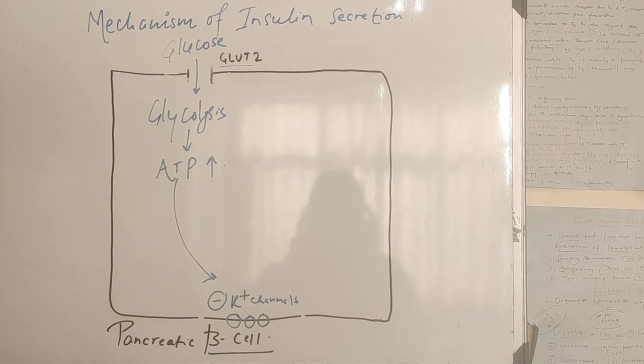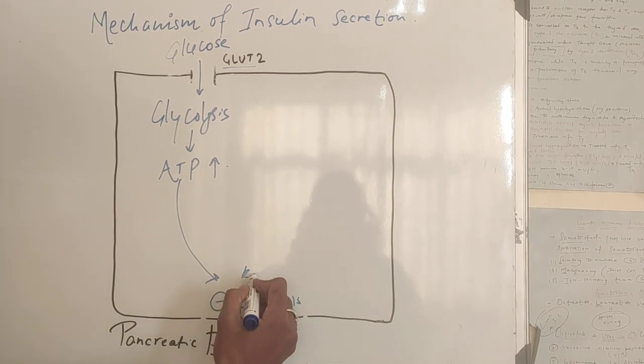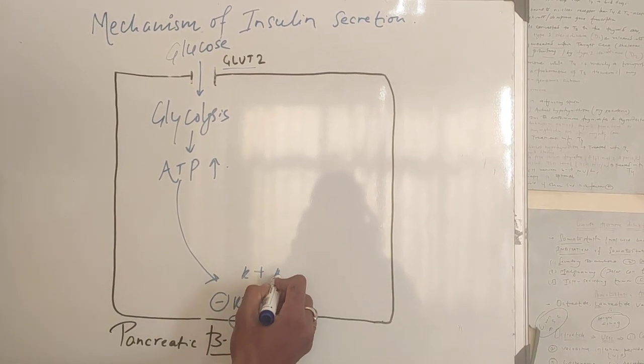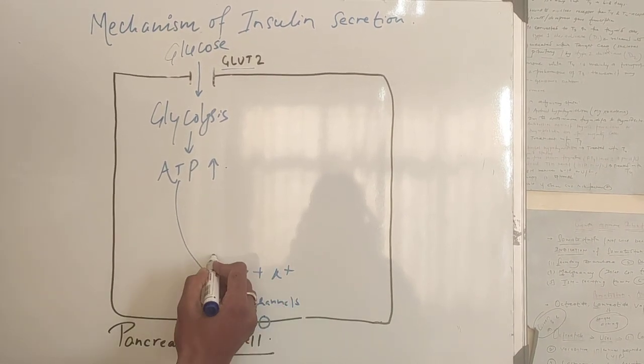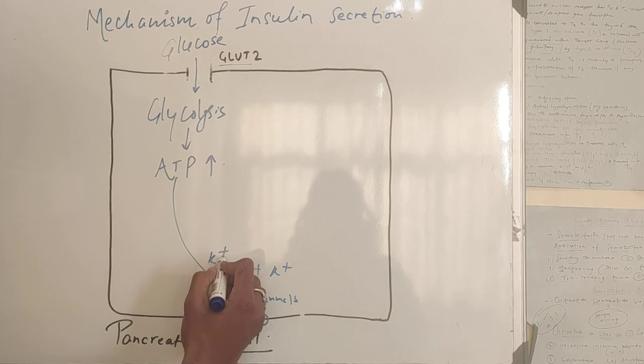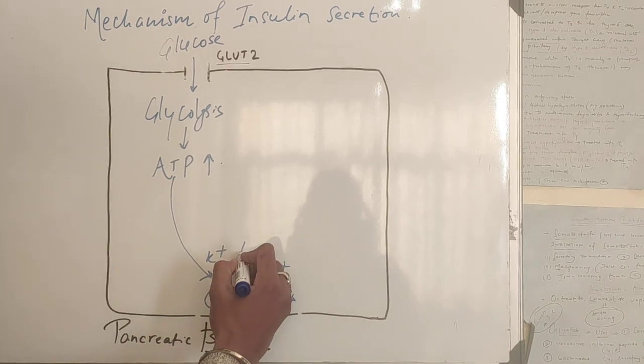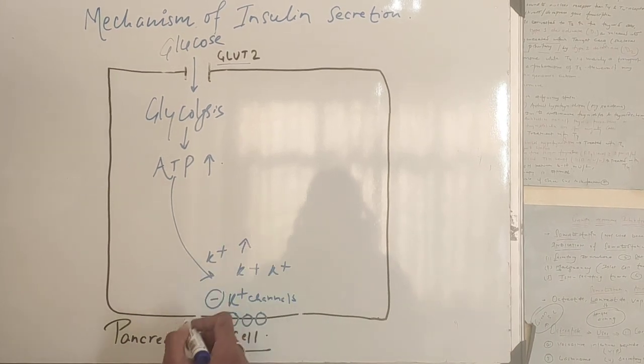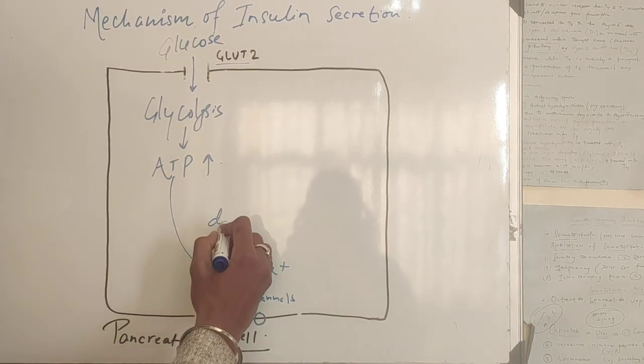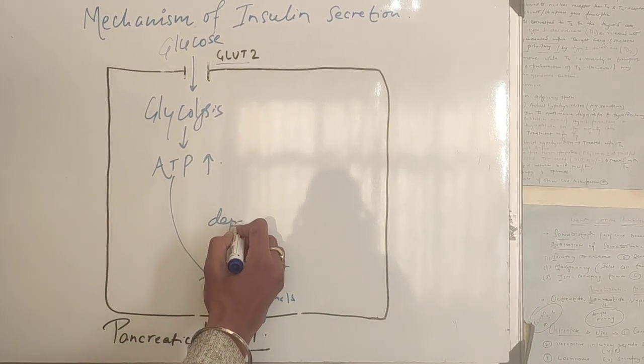Due to this, potassium gets accumulated inside the cell, and it leads to depolarization of the cell.